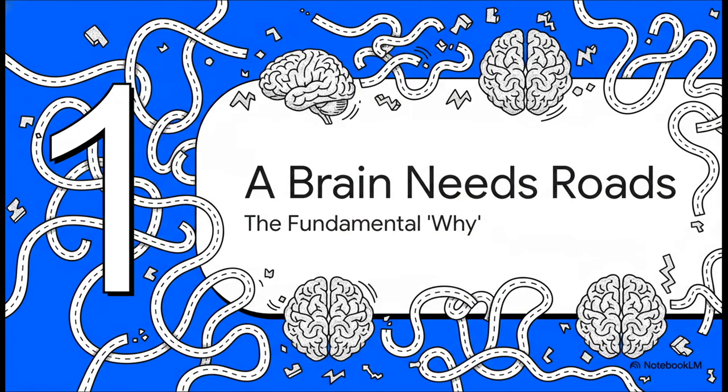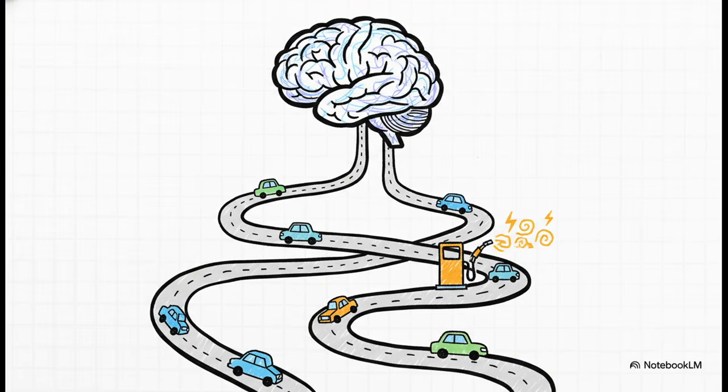To get this, we have to start with a really simple but powerful metaphor. So for this first part, let's call it a brain needs roads. This gets right to the heart of the fundamental why behind this entire thing. Now, what's so cool about this is how simple it all becomes when you look at it this way. Just imagine, ICP is this super smart brain, right? And ARO, well, ARO is a massive system of roads connecting to it.